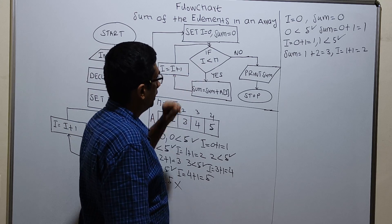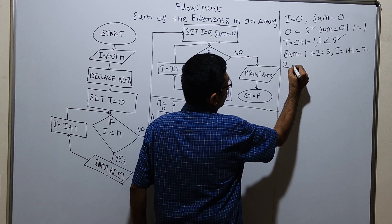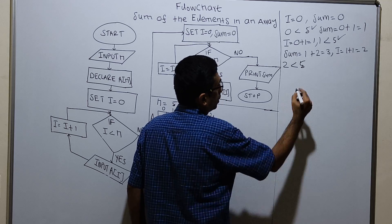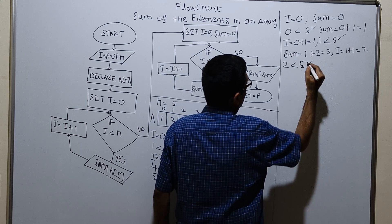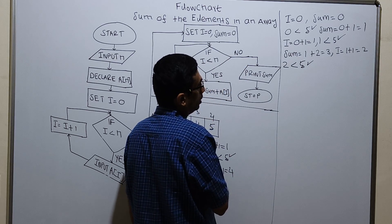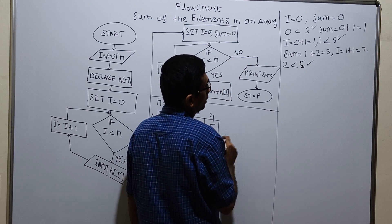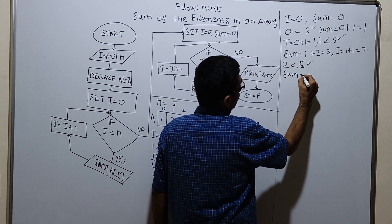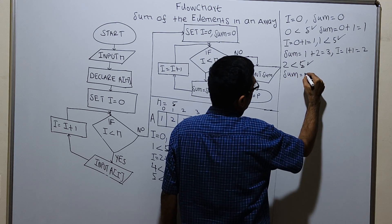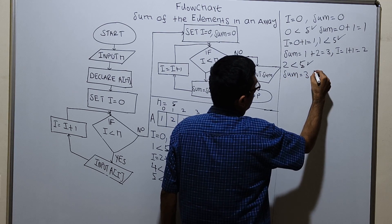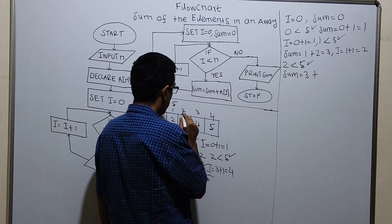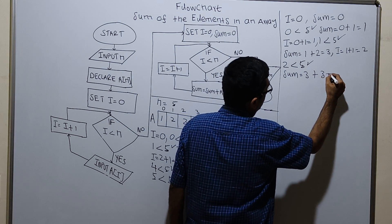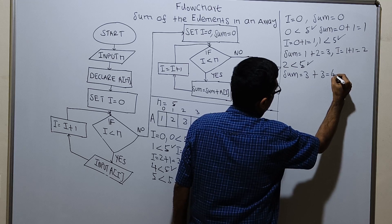Now I am checking condition i less than n: 2 less than 5, which is true. sum equal to sum plus a of i. sum equal to existing value of sum is 3. i value is 2, a of 2, having a value of 3. 3 plus 3 which is equal to 6.